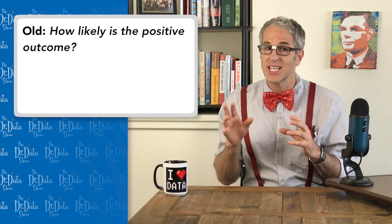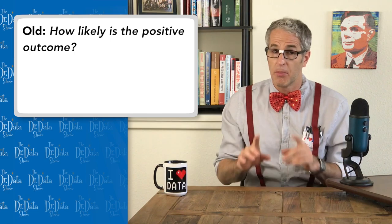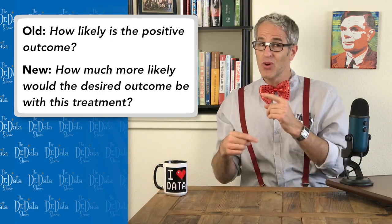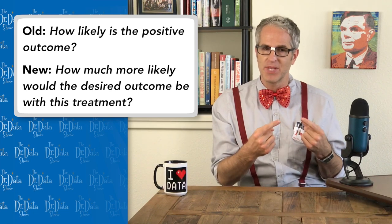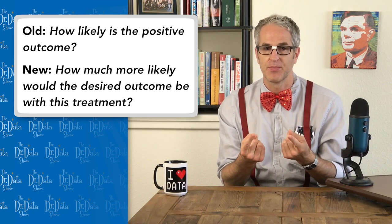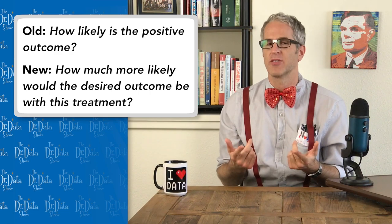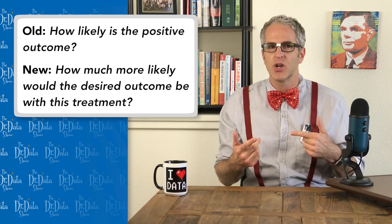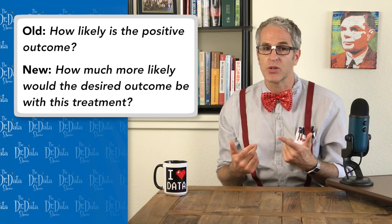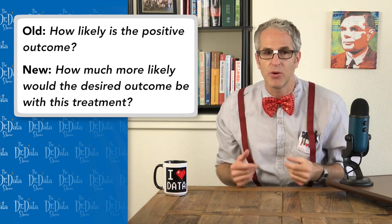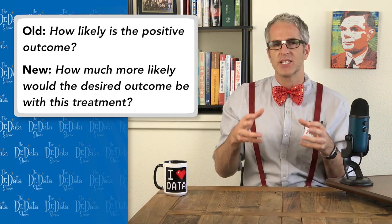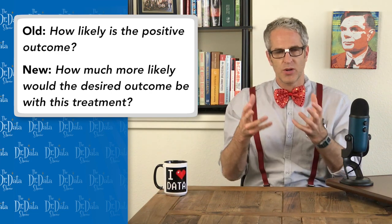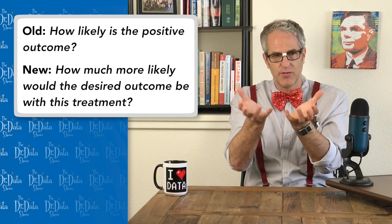For each individual, standard predictive modeling answers the question: how likely is the positive outcome? But uplift modeling answers: how much more likely would the desired outcome be with this treatment? After all, the best way to do influence is to predict influence. The most direct way to know whom to market to is to know who is persuadable. Targeting in this way takes a marketing budget or a sales team and makes it more powerful.